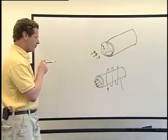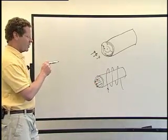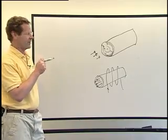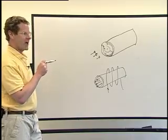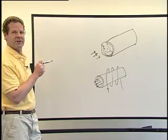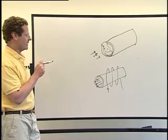So particles that go down the center are exactly aligned with the magnetic field. They won't get any kick. If a particle has a direction that's a little bit different from the magnetic field, it's going to get a kick.